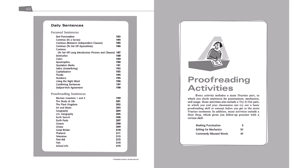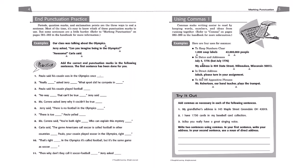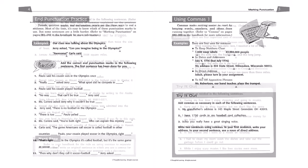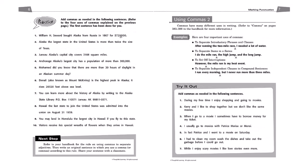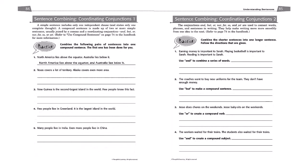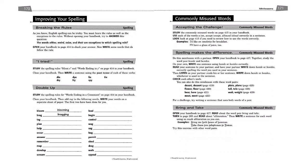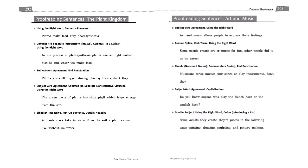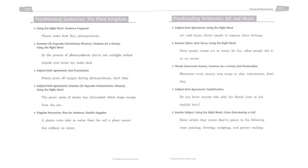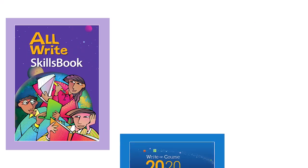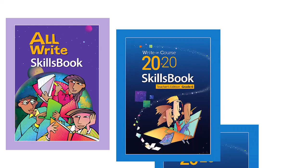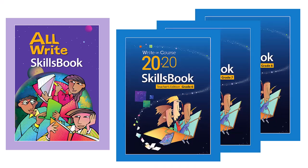Let's take a look at a few proofreading activities. Here we have practice for end punctuation, as well as using commas and more practice with commas. Here we have activities for practicing sentence combining. Here we have mini lessons to improve spelling and to sort out commonly misused words. And here are some of the daily sentences that students can use to practice what they're learning. You can supplement your grammar instruction from the AllWrite Skills book by using the Write On Course Skills books for grades 6, 7, and 8. They contain cross-references to the AllWrite Handbook.